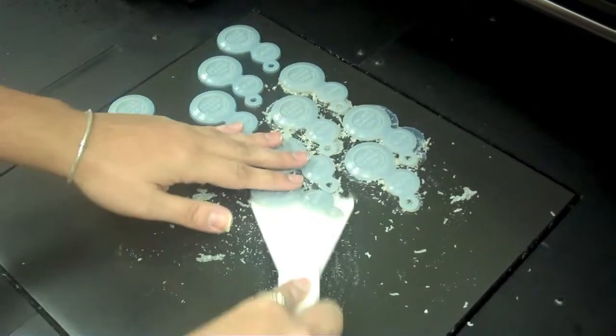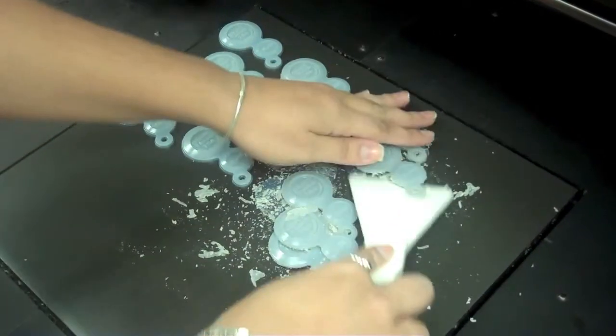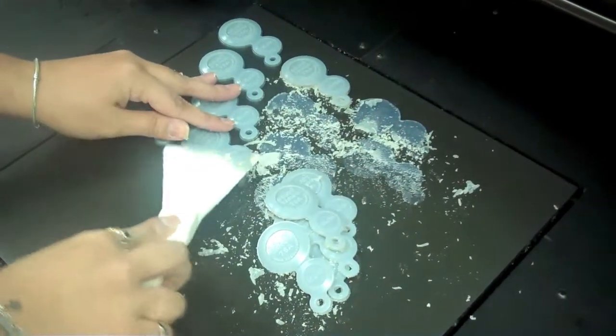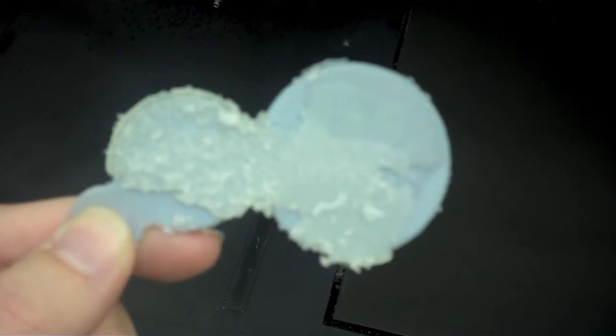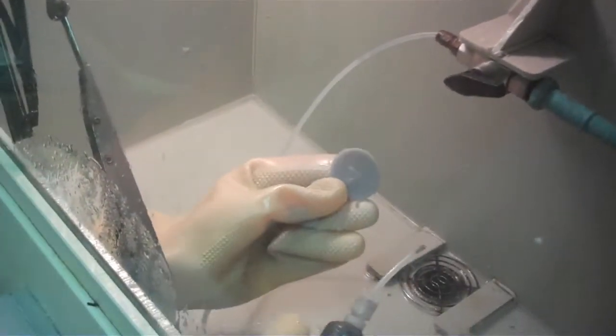Once the entire build is completed, the part is taken out of the machine for post-processing. Any support structures created during the build are removed at this time through a water jet process.